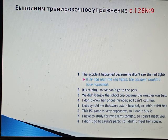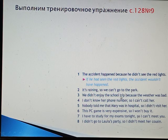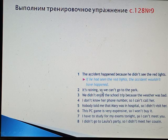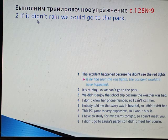It's raining, so we can't go to the park. Идёт дождь, и в парк мы пойти не можем. А если бы не было дождя, мы могли бы пойти в парк. Мы воображаем ситуацию, которая относится к настоящему времени — это второе условное. If it didn't rain, we could go to the park. Можно вместо could использовать would: If it didn't rain, we would go to the park.